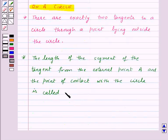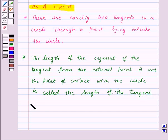This is called the length of the tangent from the point A to the circle.